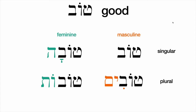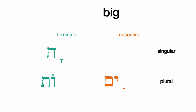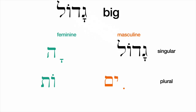If we take a different adjective — no longer good, but big — the Hebrew word for big is gadol, and that works just fine for the masculine singular. Here's some good news: the work you put into memorizing im, ah, and ot — those same endings are going to work for our new adjective gadol.